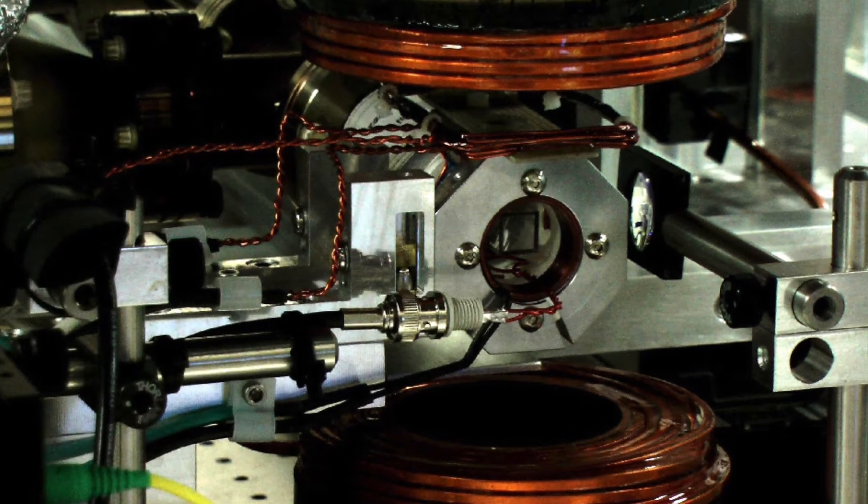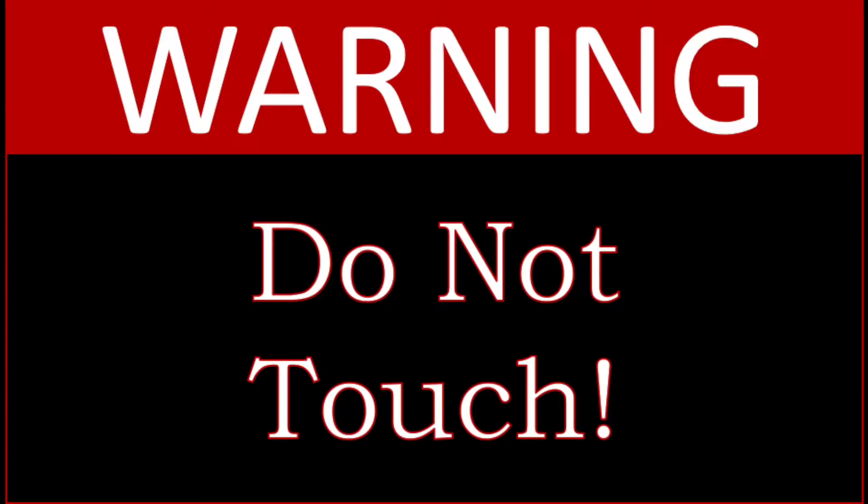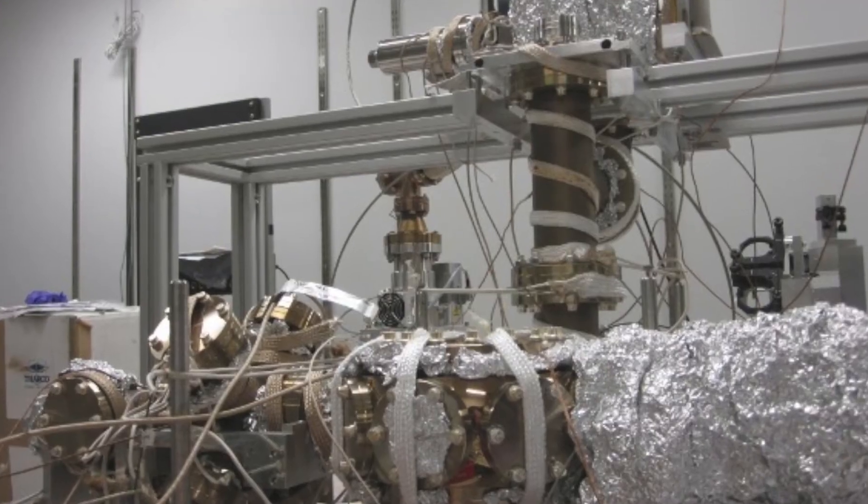Once our atoms are prepared, we can then start to manipulate them using light and magnetic fields, but we can't touch them. Since we're so amazingly cold, anything introduced into this system would heat the ultra-cold cloud of atoms up and destroy our sample. So we also require that we have a very good vacuum system.